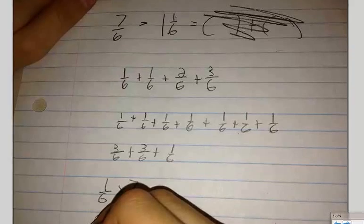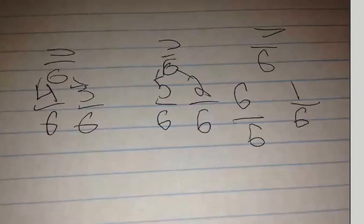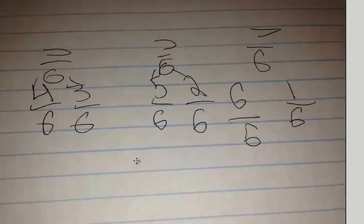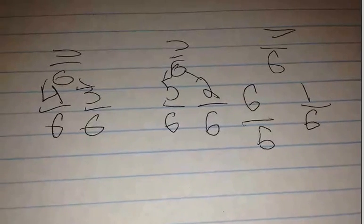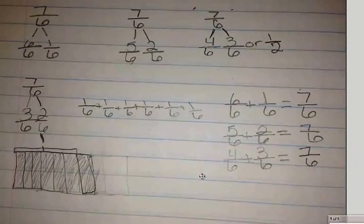So I could represent my answer as a series of sums. I could also represent my decomposition as number bonds. So I could break 7 sixths into two parts: 4 sixths and 3 sixths. Likewise I could do this with 5 sixths and 2 sixths and 6 sixths and 1 sixth. So I can represent this decomposition in different ways.